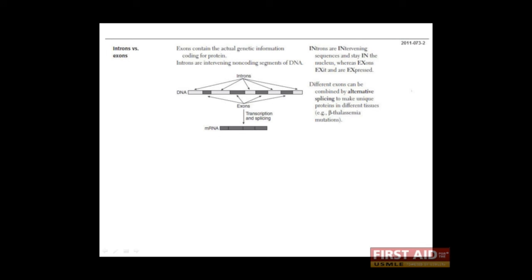Now again, the mechanistic steps of the spliceosome are less important than the concept of introns and exons. Here we have a schematic of a gene. You can see that the gene itself is organized into introns and exons. Now remember, the first product that is produced by RNA polymerase 2 is known as HnRNA, or heterogeneous nuclear RNA.